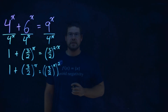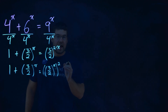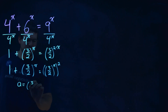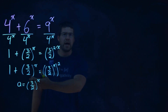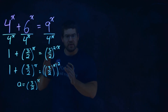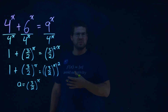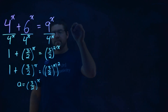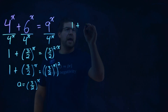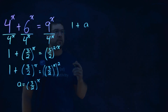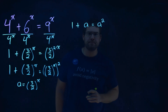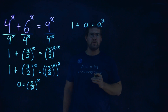Now it's a little easier. Let's set a — the variable a — equal to (3/2)^x. So when we do this substitution, it becomes a much simpler problem. We now have 1 plus a, which is (3/2)^x, equals a squared. Not too bad to solve now.